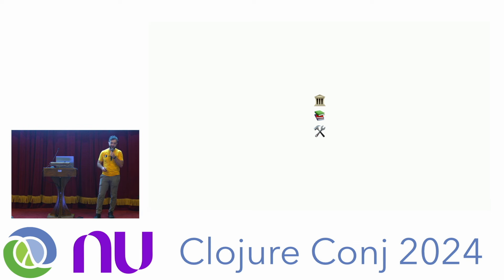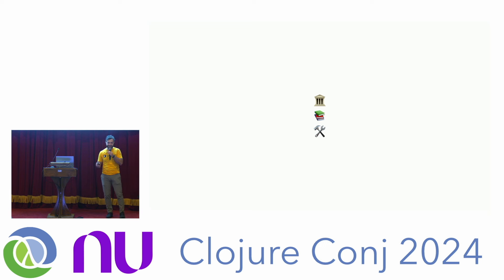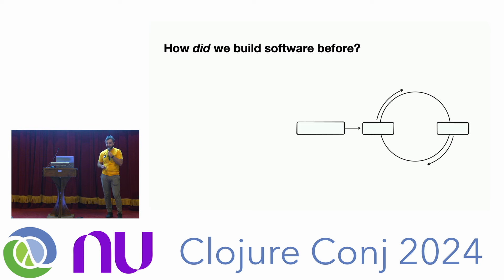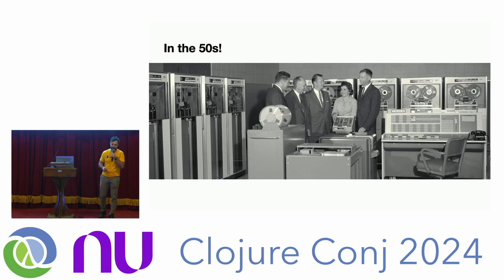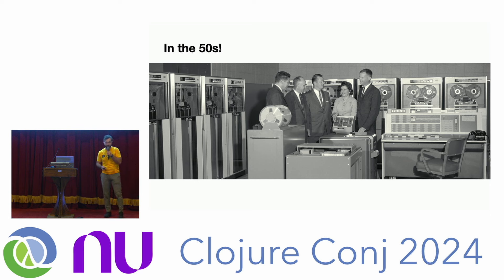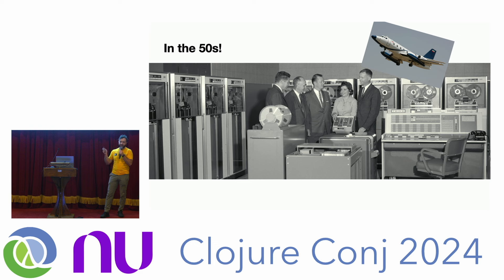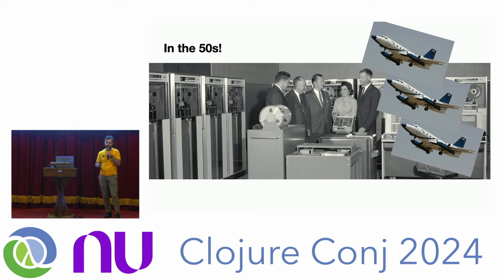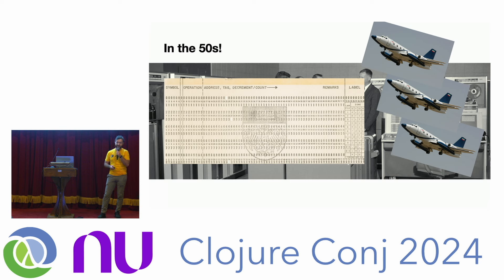To answer this question, I'm going to take you on a journey through how we built software since the dawn of computing, and we'll eventually get to an actual implementation of a sync engine. We'll start in the 50s with the IBM 7090 — it doesn't really even look like a computer today. It cost about three million dollars, equivalent to three ten-seater private jets. In programming, you had to use punch cards.